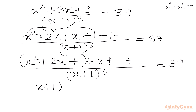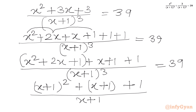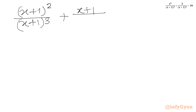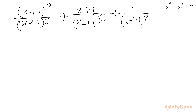So I will write the numerator as (x+1)² plus (x+1) plus 1, over (x+1)³ equal to 39. Now I will split the numerator with respect to the denominator. We can write (x+1)² over (x+1)³, then (x+1) over (x+1)³, and then 1 over (x+1)³ equal to 39.